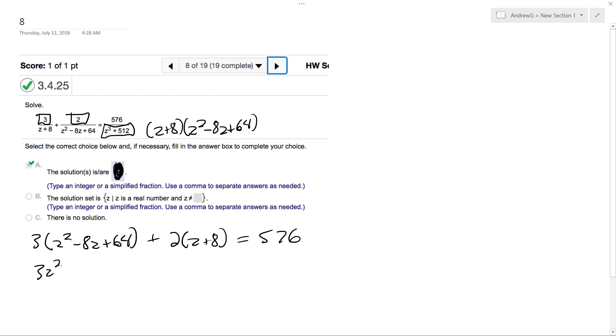So we get 3z squared minus 24z plus 192 plus 2z plus 8 equals 576. So 3z squared minus 22z plus 200 equals 576.